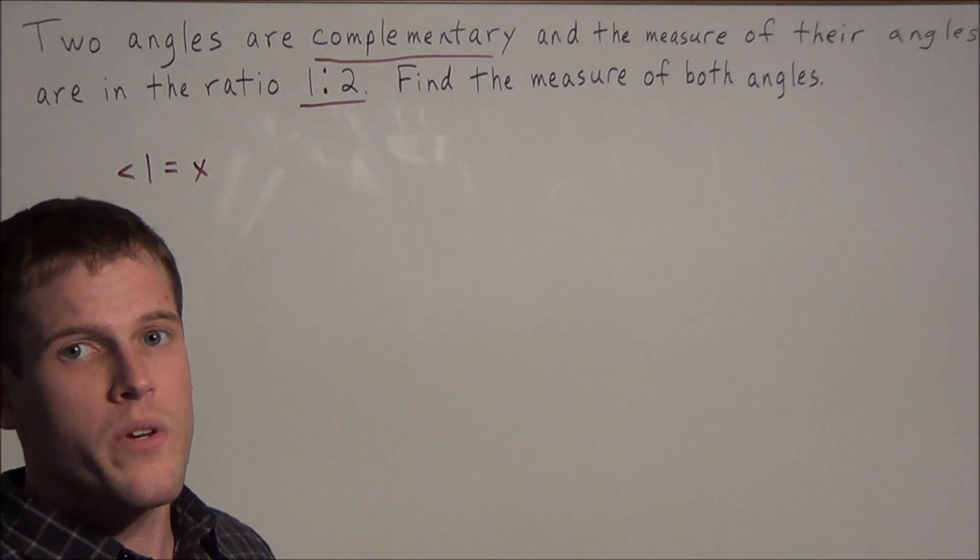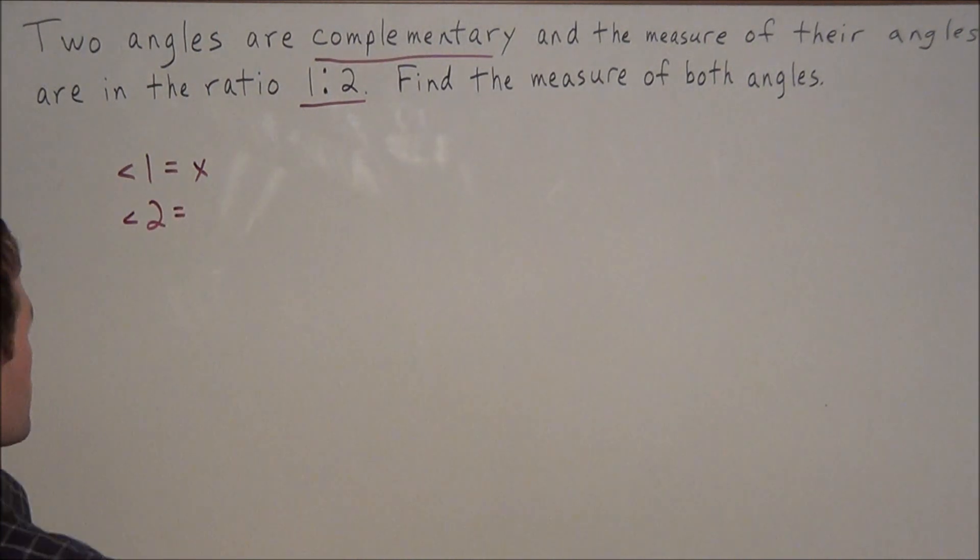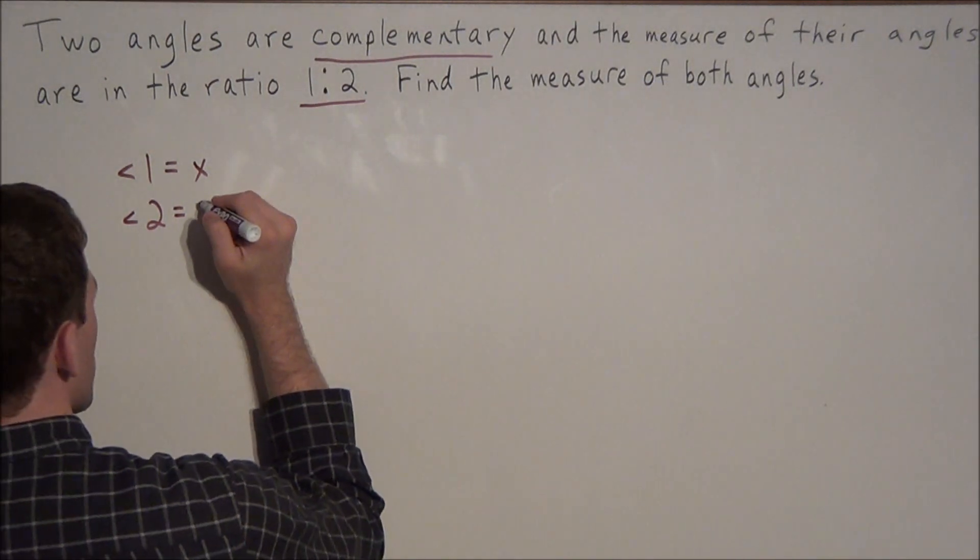Now for the second angle, all we know is that the ratio of these two angles is 1 to 2. So what that tells us is if the first angle is x, the second angle we could call 2x.